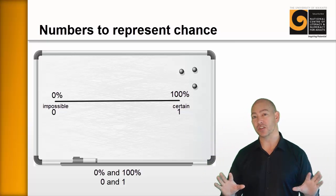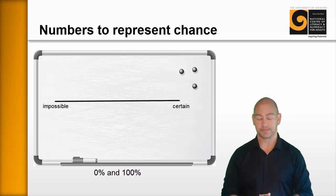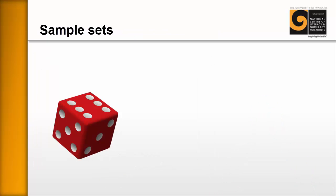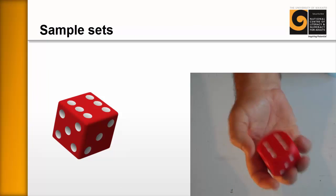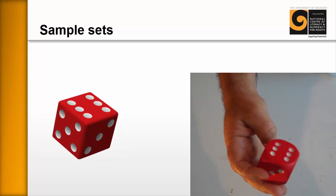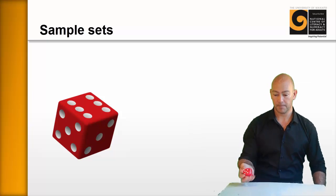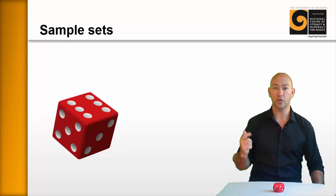And now we're going to move into describing it as fractions. Step two, sample sets. Grab yourself a dice and simply ask the learners, what do you think I'm going to roll? And then ask them to describe why they think that will occur.